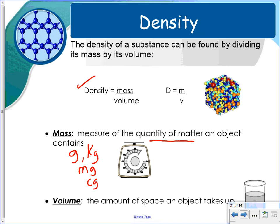Volume is the amount of space an object takes up. That's usually in milliliters, cubic centimeters, liters. And remember that one milliliter is equal to one cubic centimeter.